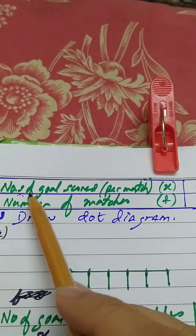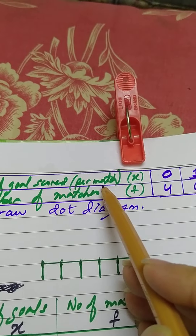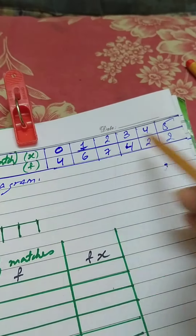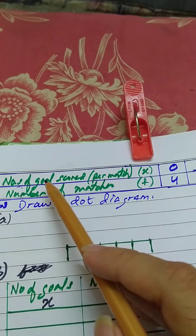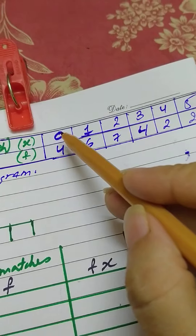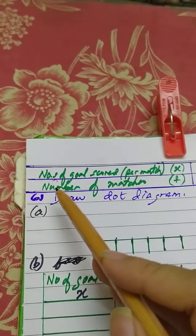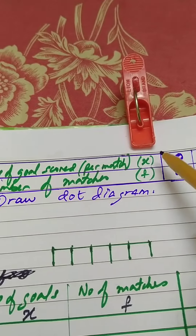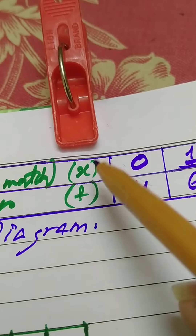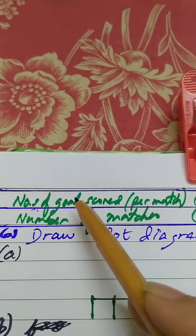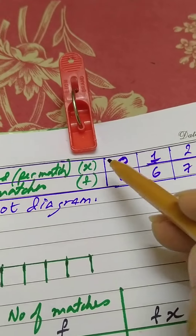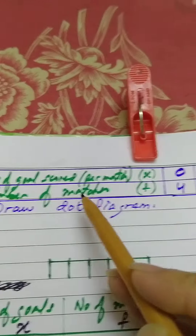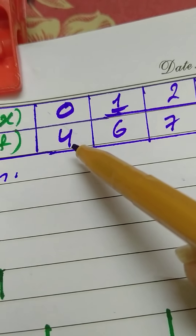The question is: the number of goals scored per match by a soccer team in a soccer season are given in a table. The top row is x — the observation — which is number of goals scored per match: zero, one, two, three, four, five goals. The bottom row is frequency — number of matches. So x is number of goals scored per match and f is number of matches.